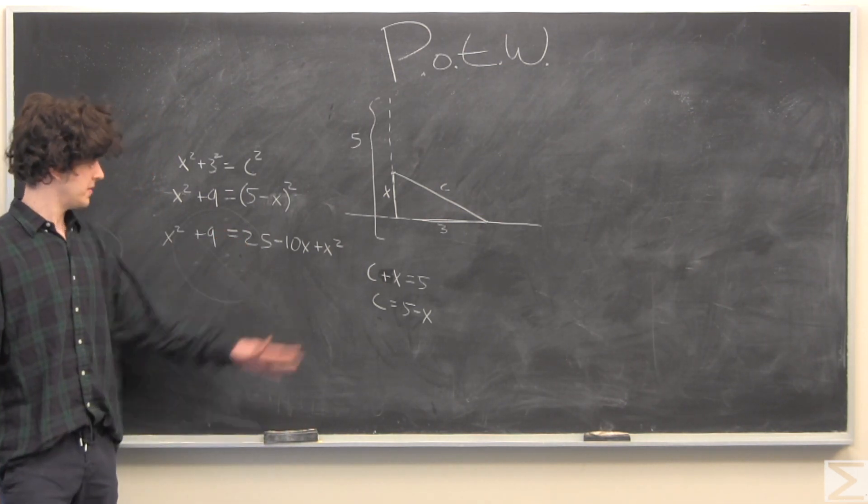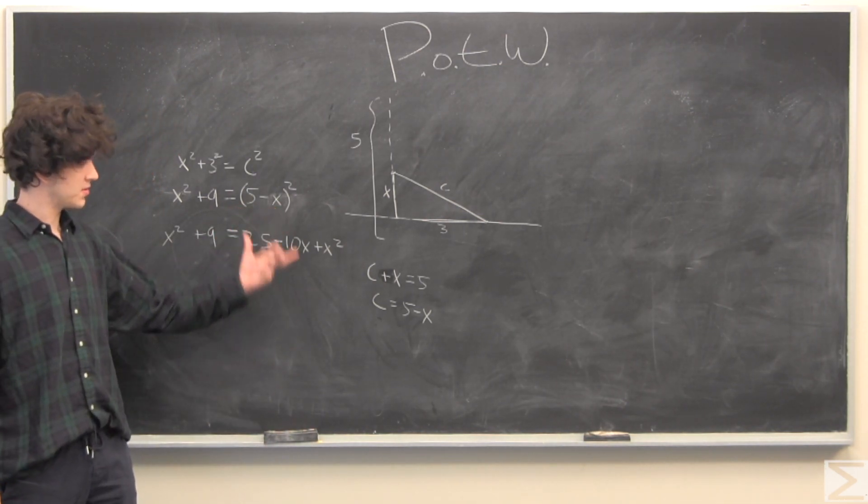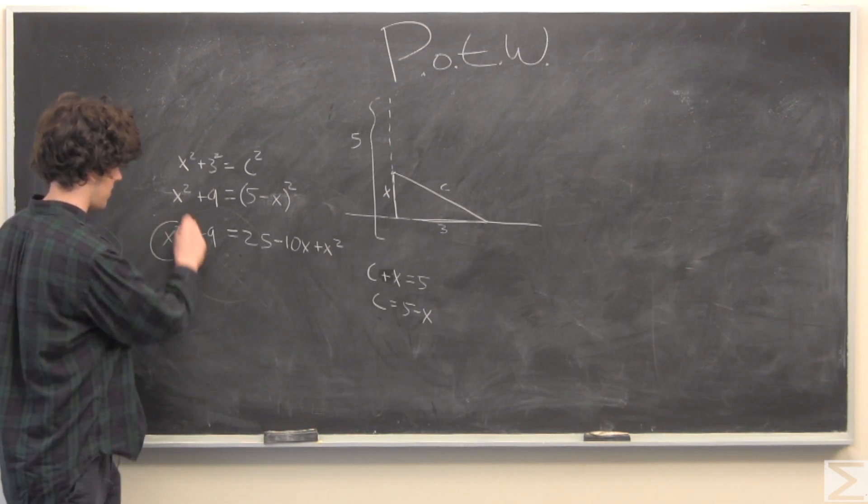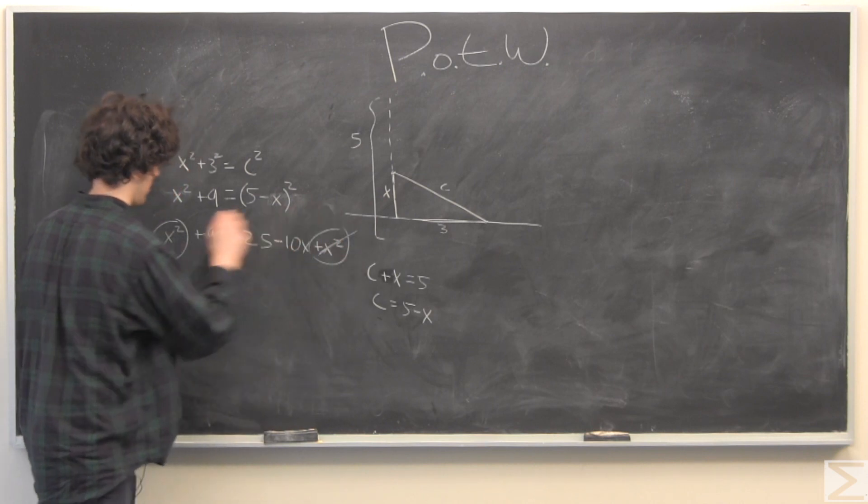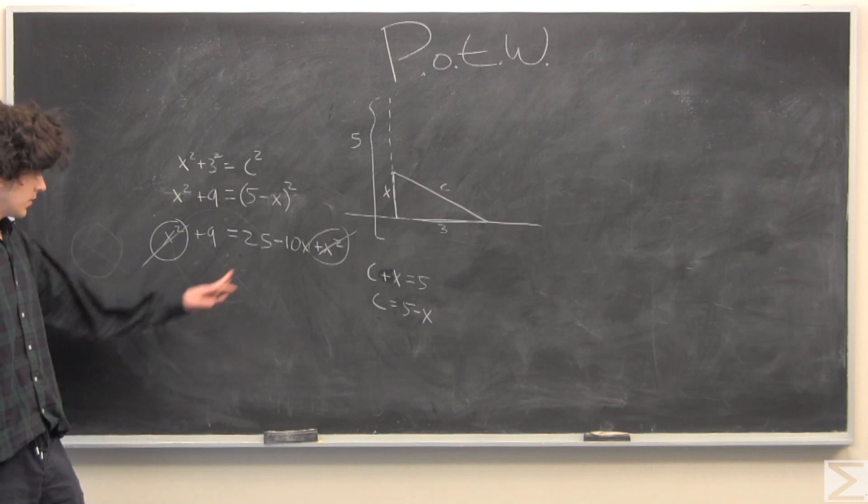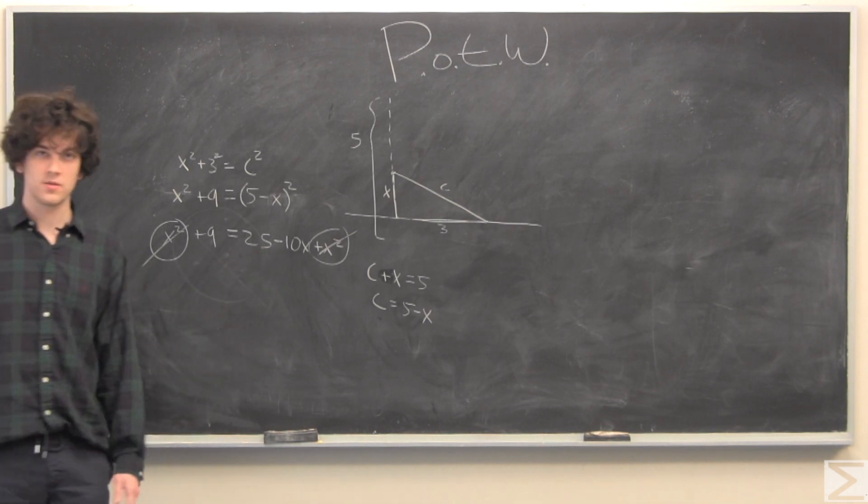Here I have everything simplified. I've expanded out this 5 minus x whole squared, and you notice we have x squareds on both sides, which we'll cancel out. So now we can just solve for x simply.